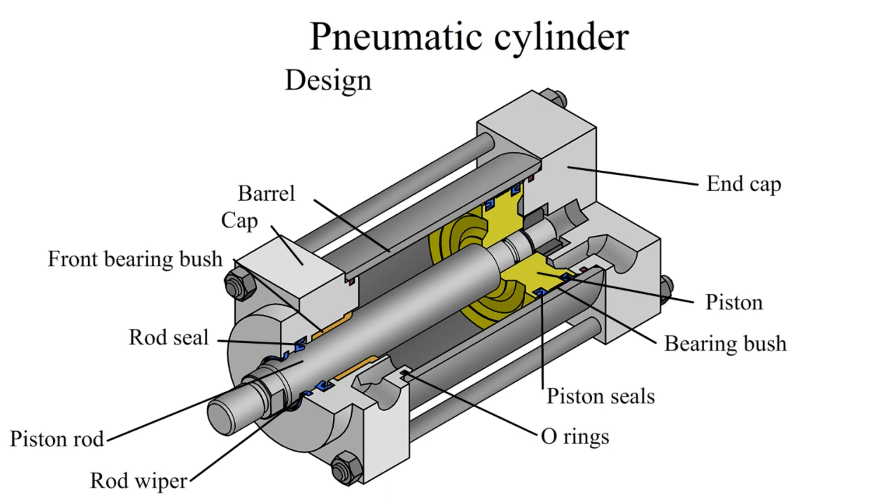O-rings are used between cap and barrel and between piston and rod. The piston is attached with the piston rod by nut to transfer the linear motion. The cap is connected by bolts.